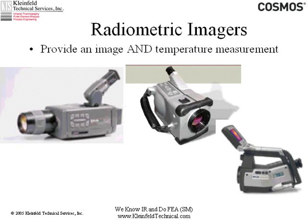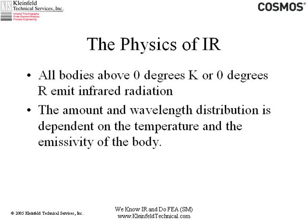An example of the equipment used — these are radiometric imagers. They provide both an image and temperature measurement. These are approximately the size of camcorders; you can see they are handheld, a larger and smaller piece of equipment. They're quite sensitive and quite accurate. The one on the left, which is a sample of the one I use, is rated at a sensitivity of 70 millikelvin — that's 0.07 degrees centigrade temperature sensitivity at 30 degrees centigrade. So it's good stuff.